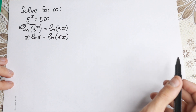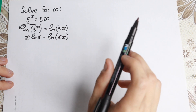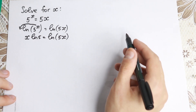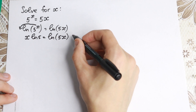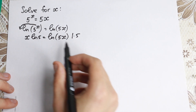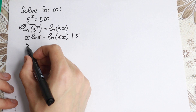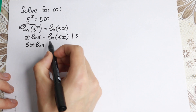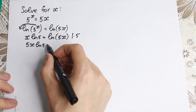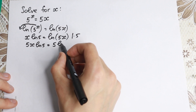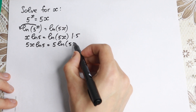Next, we need to multiply both sides by 5. Try to understand this step. Multiplying both sides by 5, we have that 5x times ln 5 equal to 5 times ln(5x).